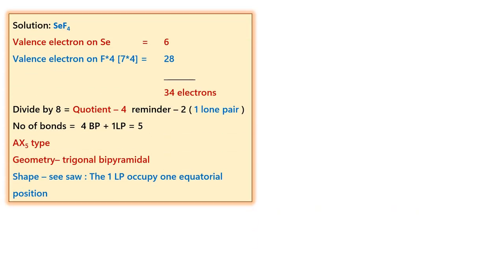Let us take selenium tetrafluoride. We know selenium tetrafluoride has selenium atom which is an oxygen family member, so the valence electrons is 6. The fluorine is a halogen, so the valence electron is 7. There are 4 fluorine atoms, so it adds up to 28. The total number of valence electrons on this particular molecule is 34 electrons.